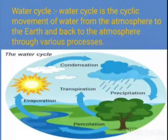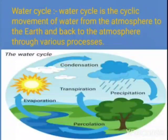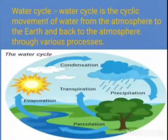As the air rises, it begins to cool. Due to the cool temperature, the water vapor condenses on dust particles present in the atmosphere, converting back into tiny water droplets. If it is very cold, tiny ice crystals are formed instead. These clusters of tiny water droplets or ice crystals floating in the air are what we call a cloud.